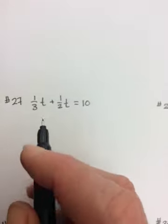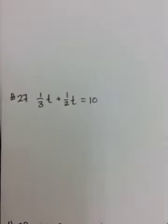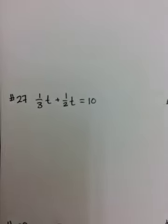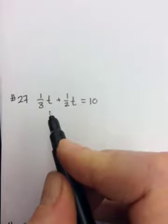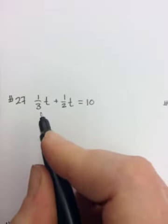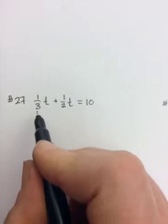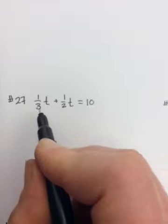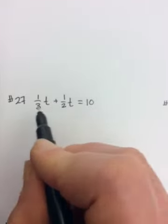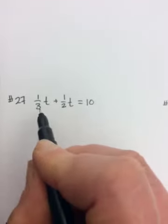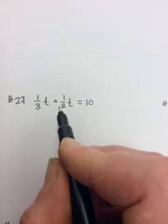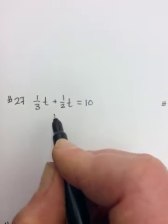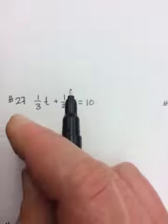Now when you have fractions, the easiest thing to do, especially for all of you that are not fraction lovers, is to get rid of the fractions. And there are two ways you can get rid of the fraction. One way is to find what's the lowest common denominator of all the fractions that are in the equation. So a third and a half, the lowest common denominator would be 6.